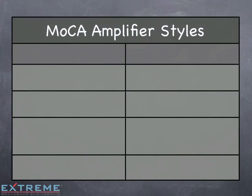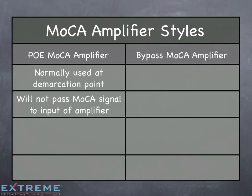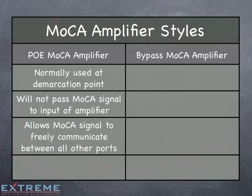There are two styles of MOCA amplifiers. One that has an integrated point of entry MOCA filter in the amplifier, called a PoE MOCA amplifier, and the other with a MOCA signal bypass, called a bypass MOCA amplifier. The PoE MOCA amplifier is normally used at the demarcation point and will not pass MOCA signal to the input of the amplifier or let other MOCA signals into the input. It allows the MOCA signal to freely communicate between all other ports, including the data port if available.